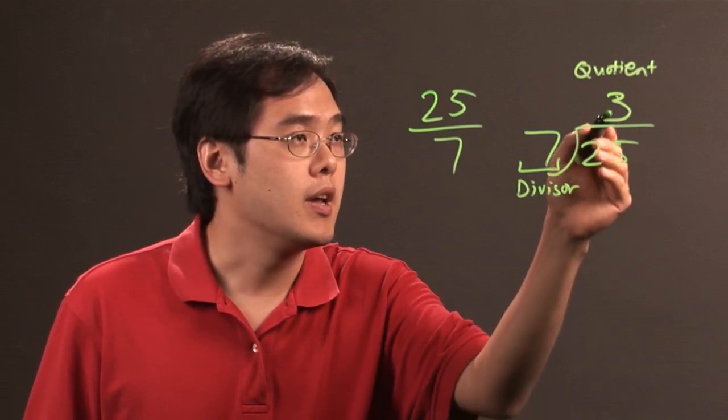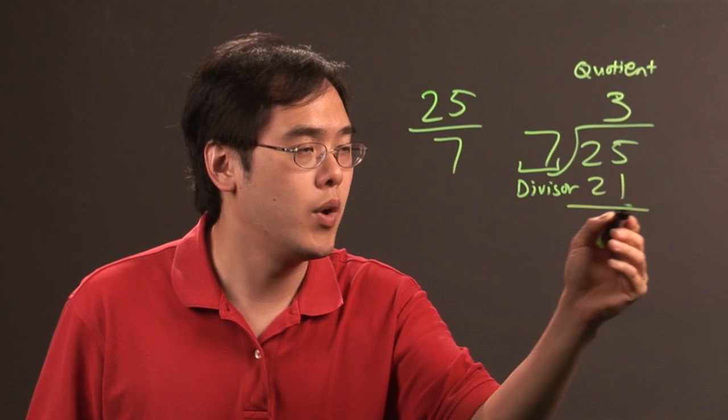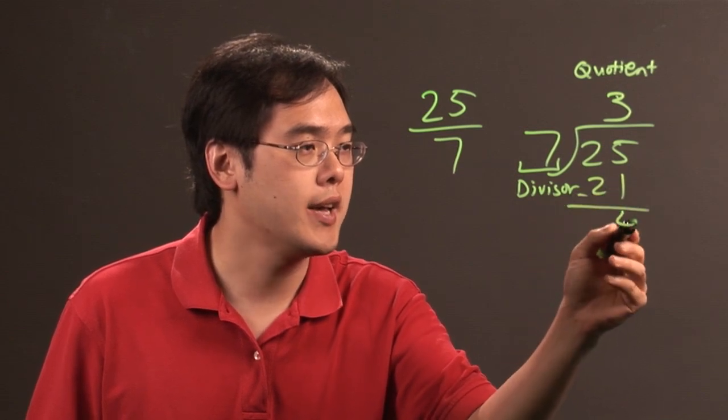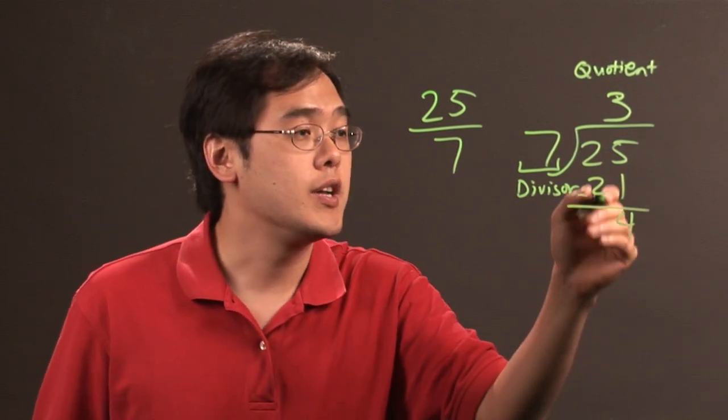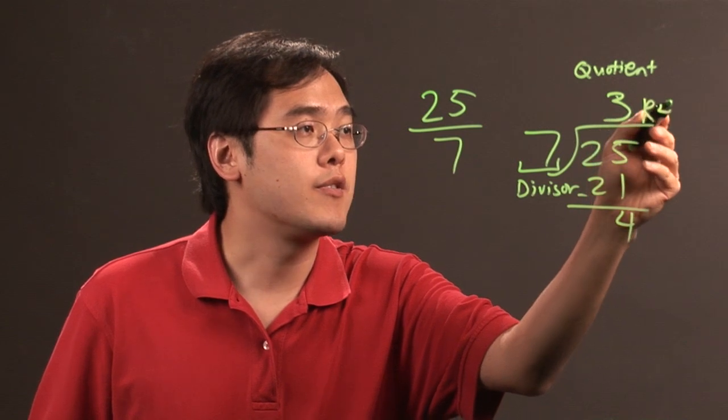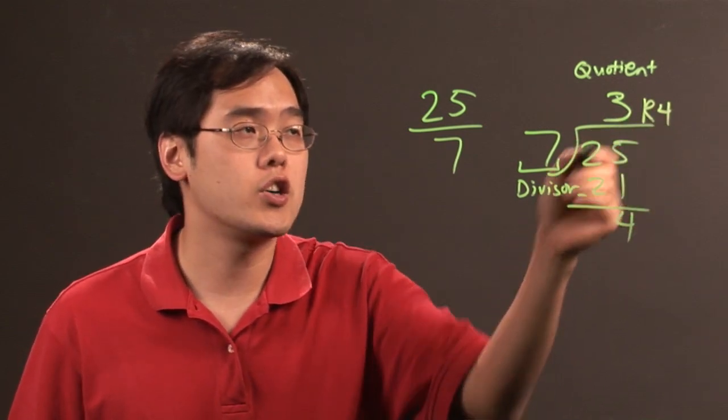So after that you take the 3 times 7 gets 21. You do the subtraction and that's going to give you 4. So it's going to be 3 remainder 4. So obviously you know that the R stands for remainder.